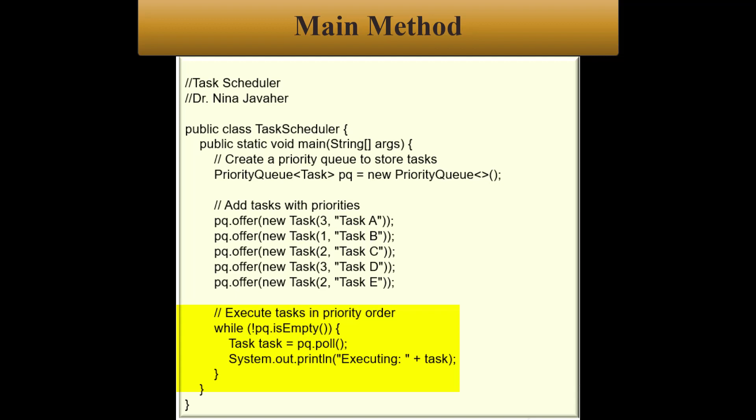By the way, this is the lowest value according to the compareTo method implemented in the Task class. The retrieved task is going to be stored in the task variable. And then we're going to print out the result using System.out.println. This loop will continue until all tasks have been executed, and then the program will terminate.